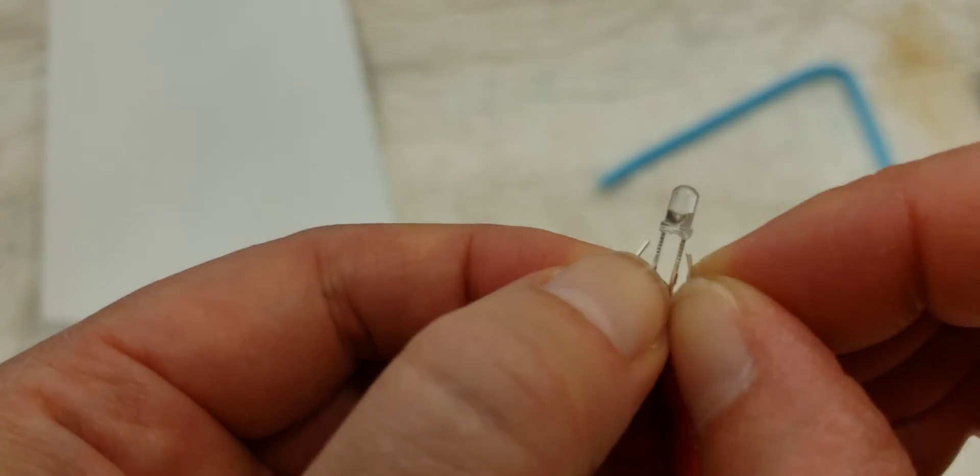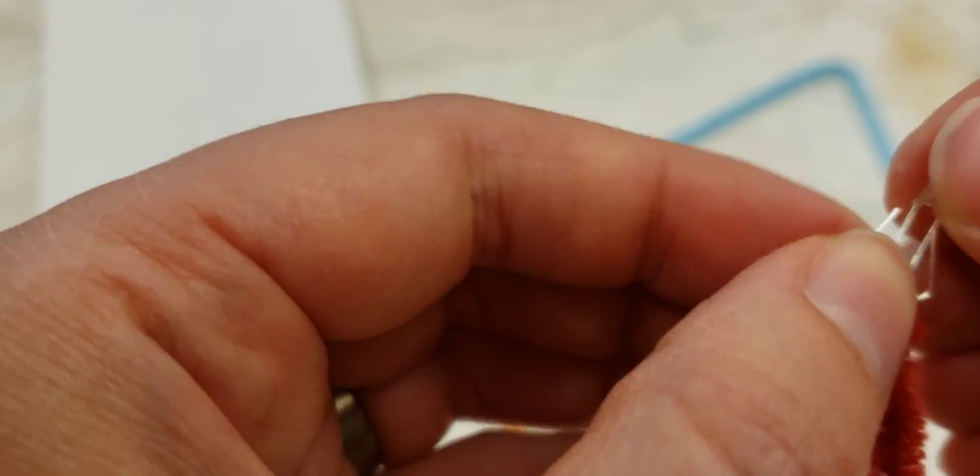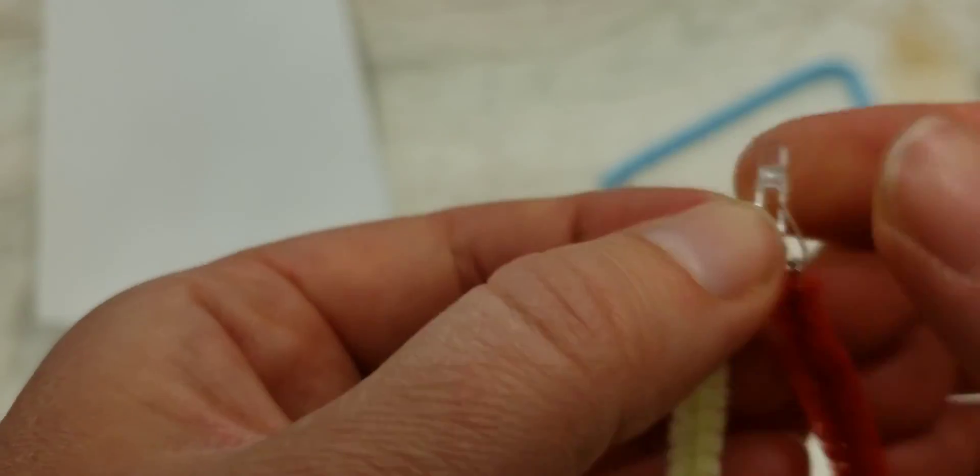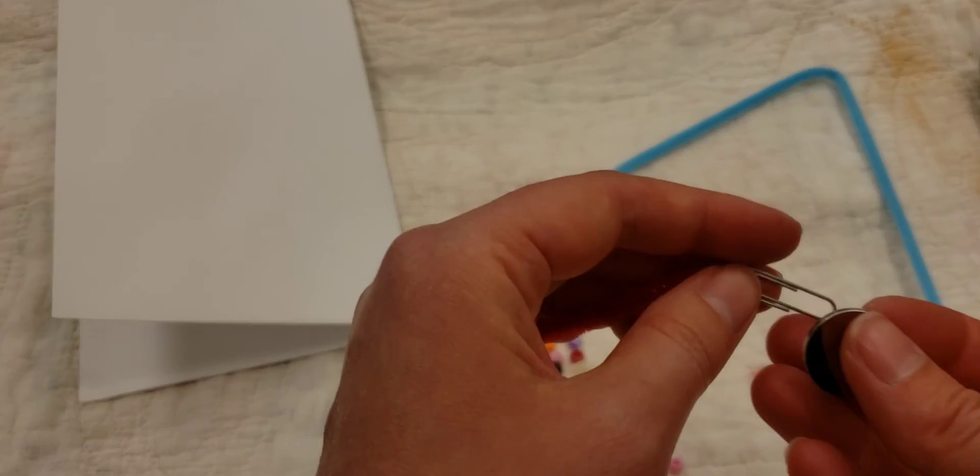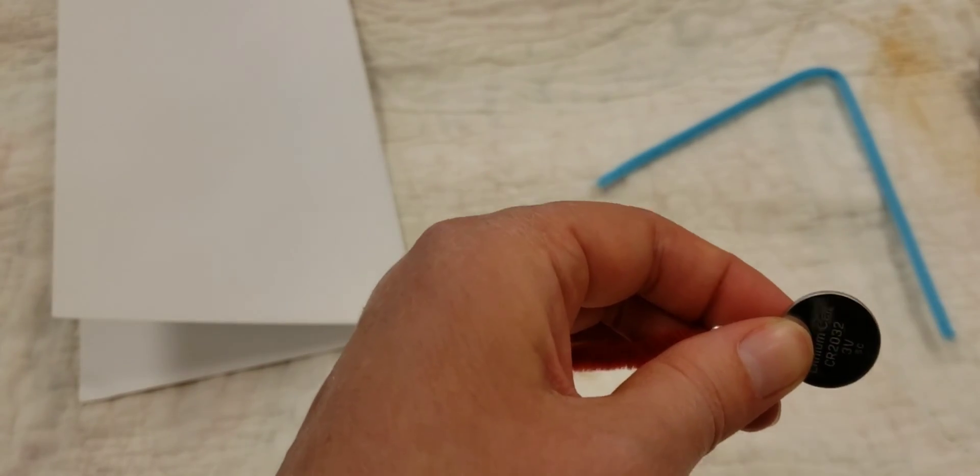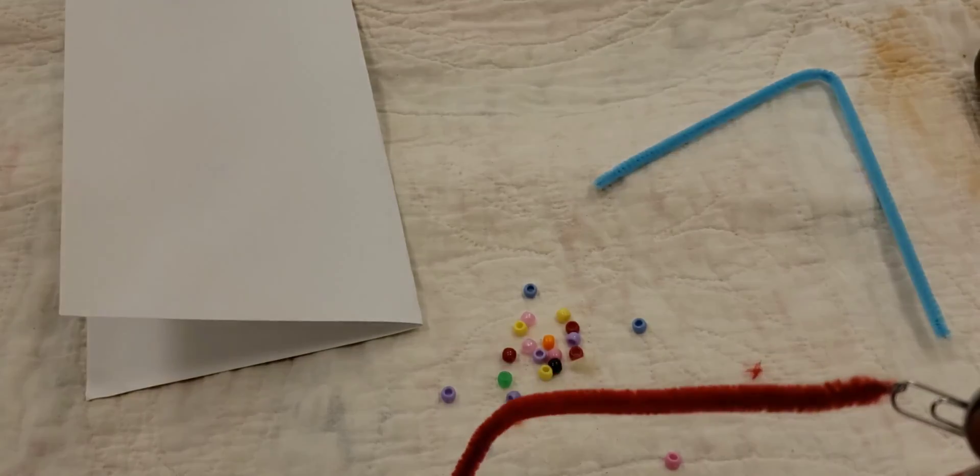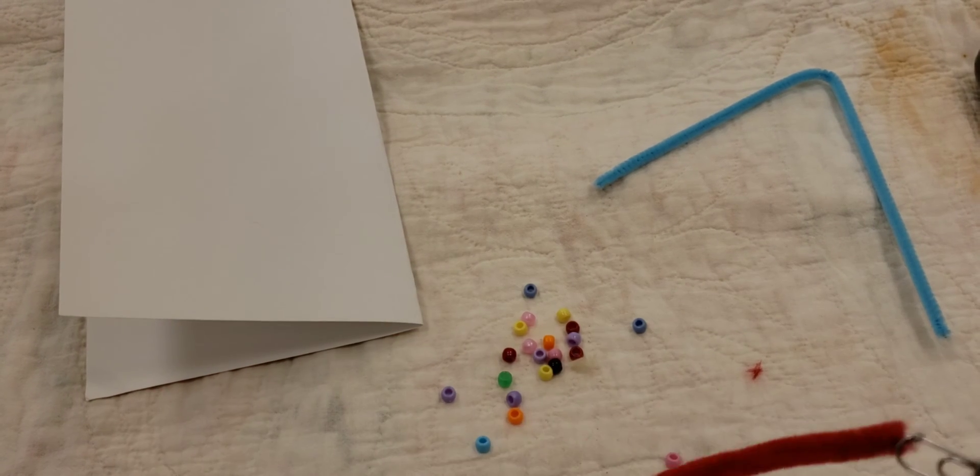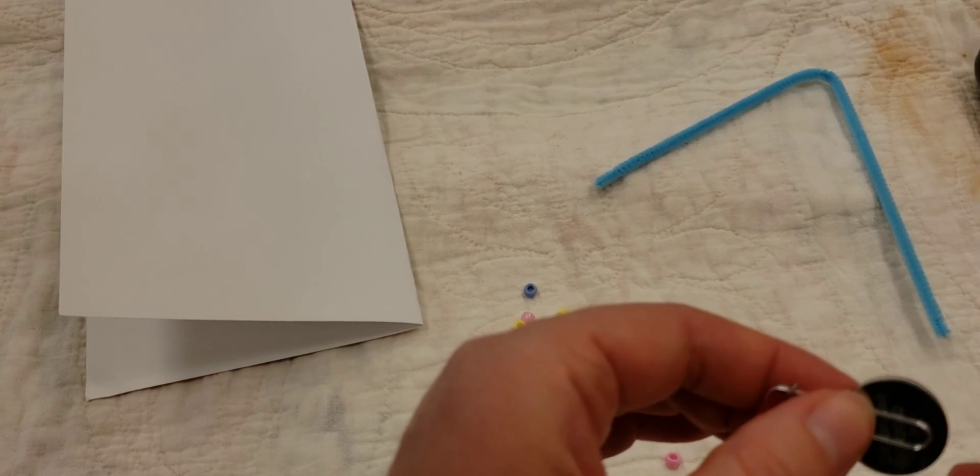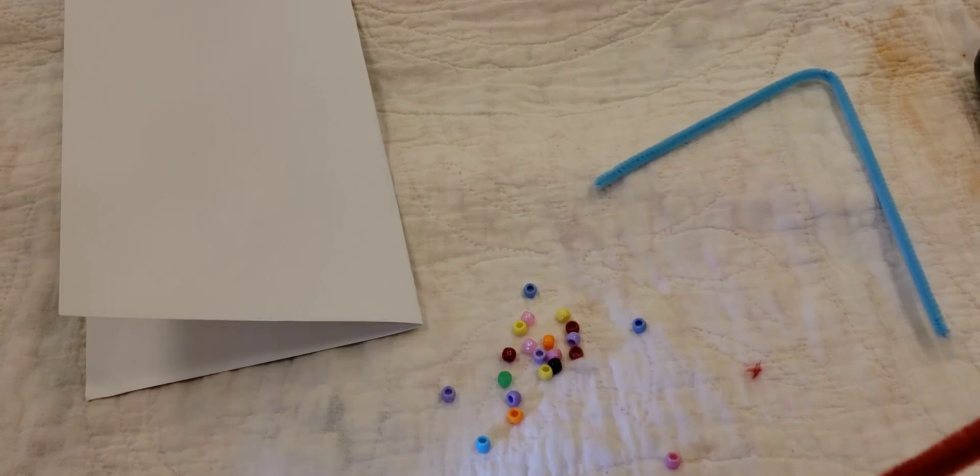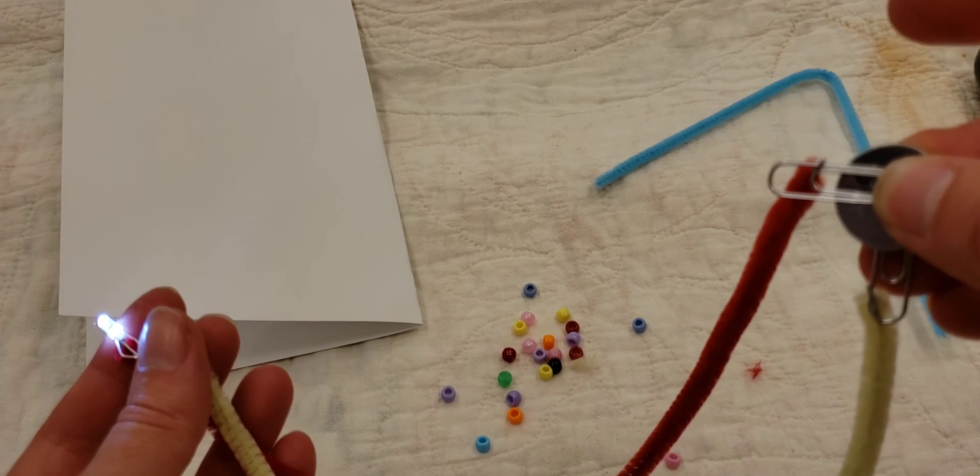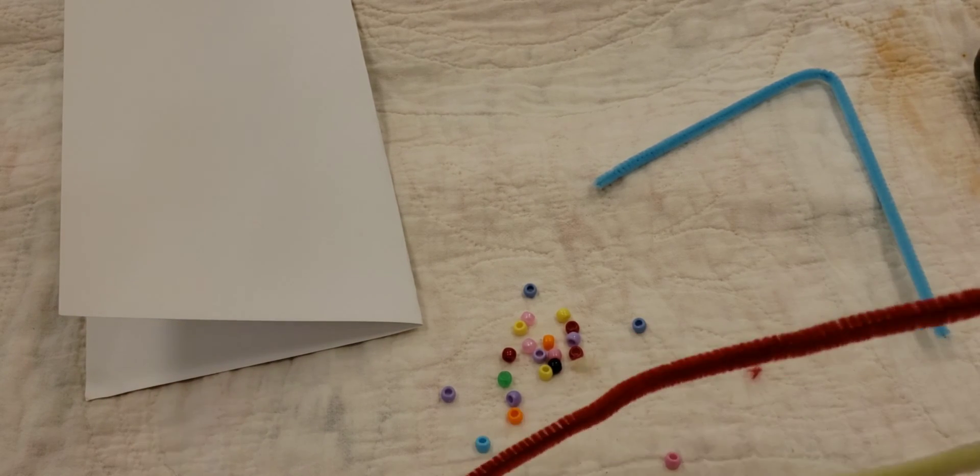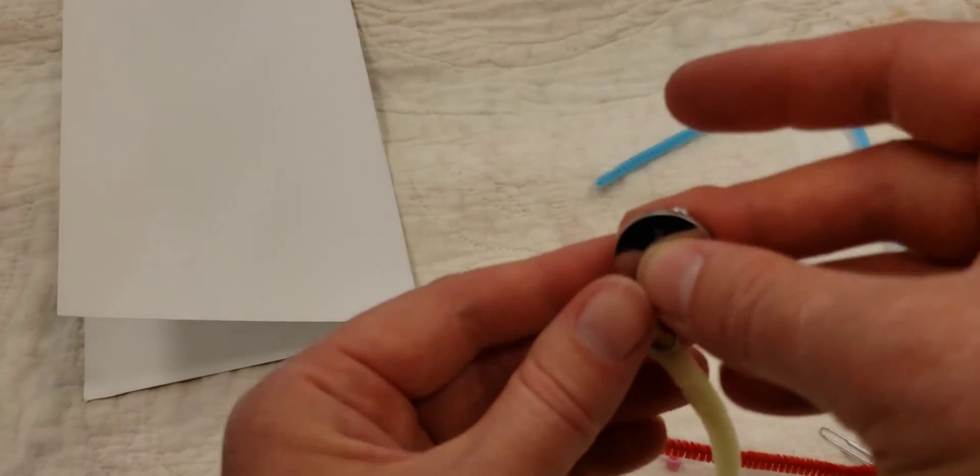You can give this part of your LED some good twists so it stays too. Then you are going to test it out and it should light up. Again if it doesn't that usually means that it is backwards. So there we are. It's lighting up fine. Now remember which side is which.